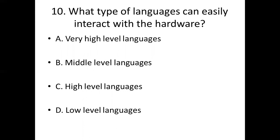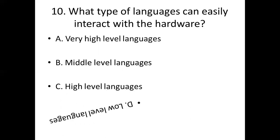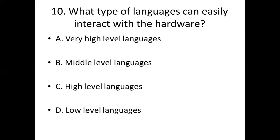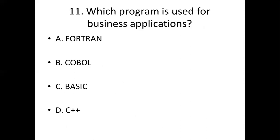Tenth bit: What type of languages can easily interact with the hardware? Option A: Very high level languages. Option B: Middle level languages. Option C: High level languages. Option D: Low level languages. Answer: Option D, low level languages.